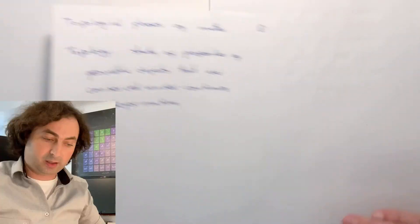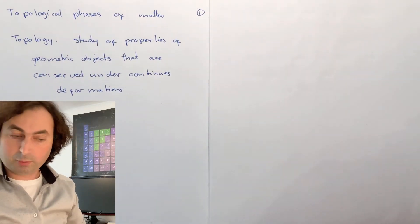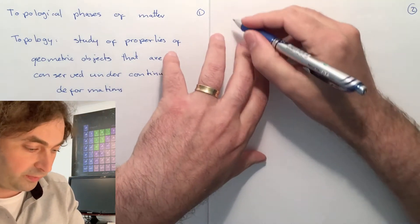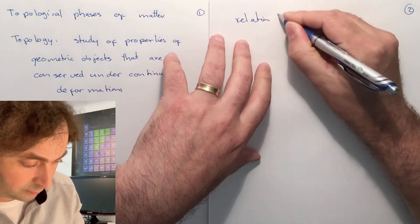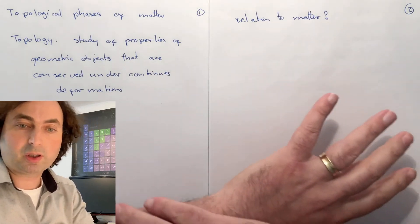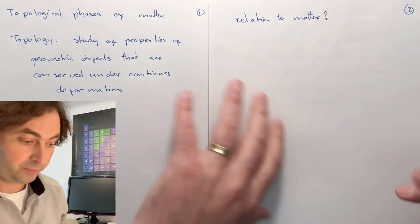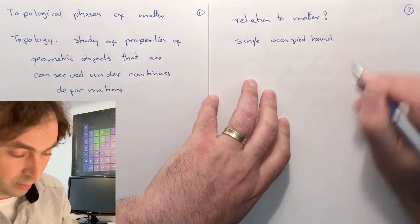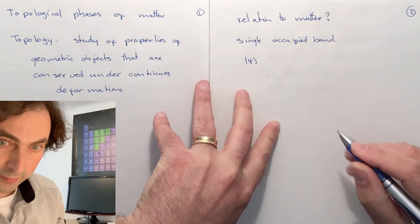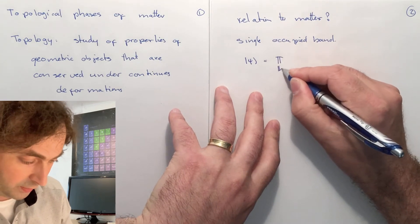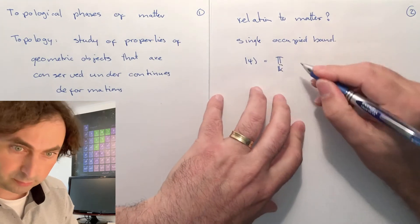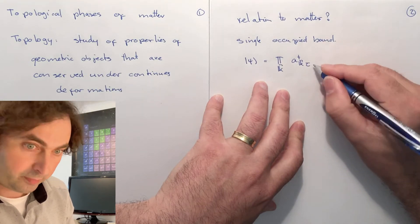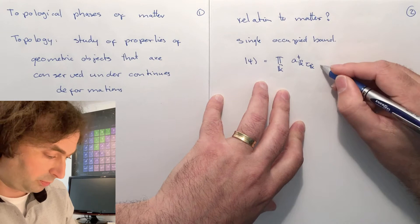Now, that's all nice and beautiful, but the question that emerges is what does this have to do with the states of matter? How can we relate this to matter? For that, we're going to have a look at the wave function of a state of matter. Let's assume that we have a single occupied band — so we talk about an insulator — and our wave function is given by a product of all k-vectors in the Brillouin zone, where we create a Bloch state with a certain wave vector and certain quantum numbers tau of k.